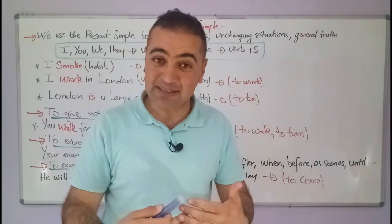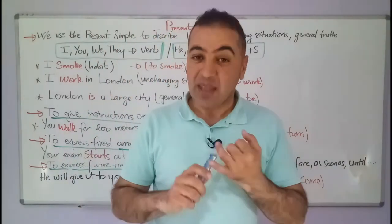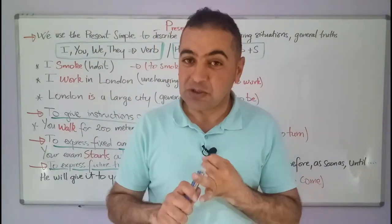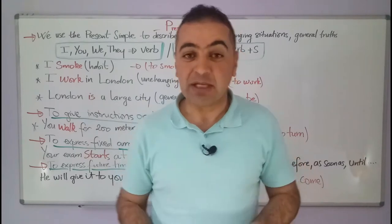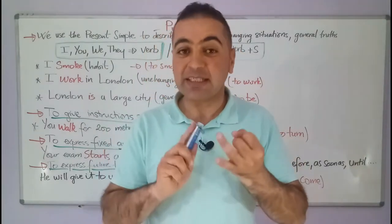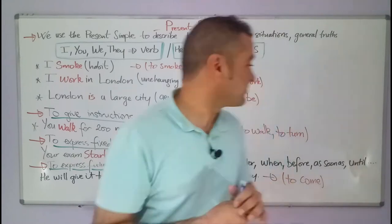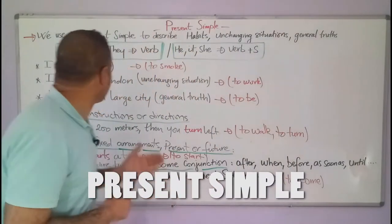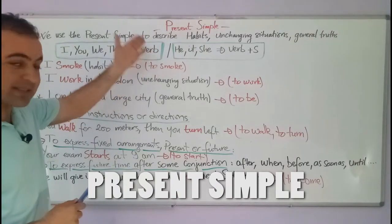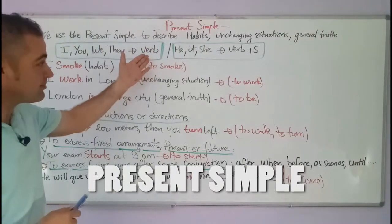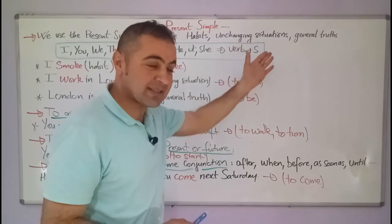To make a verb in the present simple, with I, you, we, they — the verb doesn't change. But with he, she, it — we add an S at the end of the verb. So I, you, we, they: the verb stays the same. He, it, she: the verb plus an S.